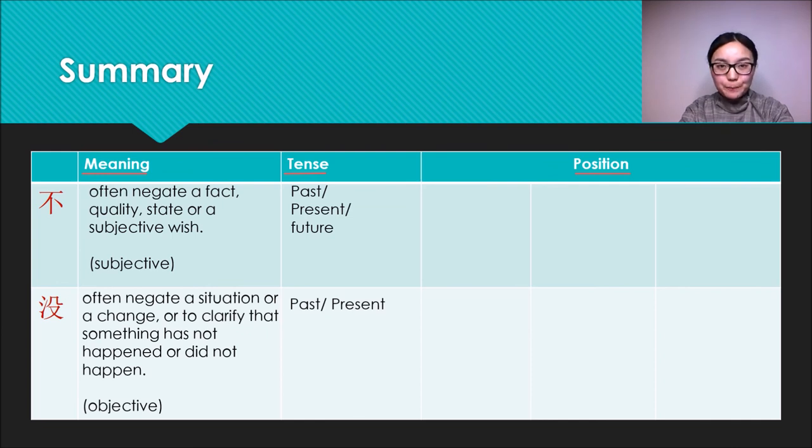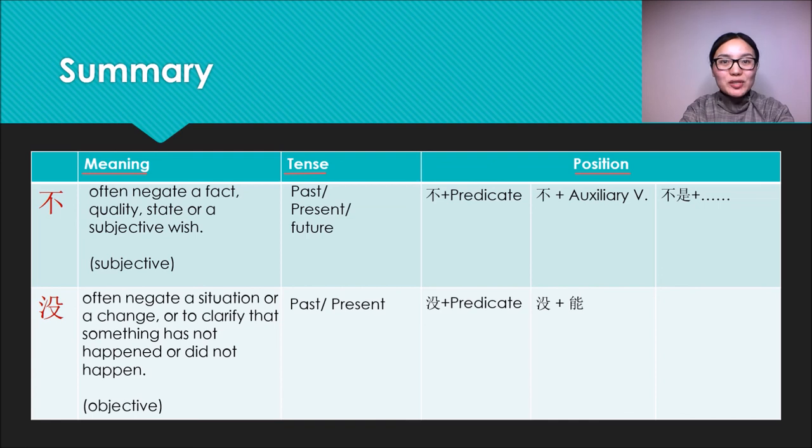The last part about position, specifically speaking, 不 and 没 can both be put before the predicate. 不 can also be put before all the four auxiliary words. Only 能 can also be negated with 没. Last part about position, we focus on some special sentences. In 是 sentence, we only use 不 to negate. However, in 有 sentence, we only use 没 to negate.